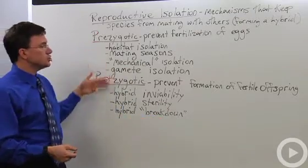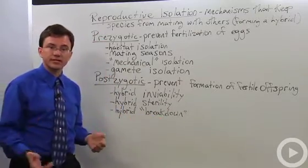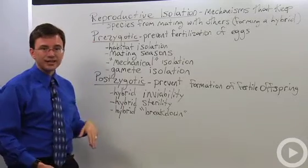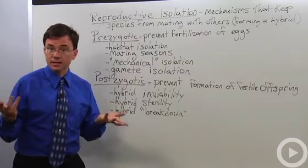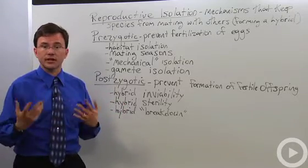These fall into two categories, these reproductive isolating mechanisms. They're prezygotic reproductive isolating mechanisms, the ones that prevent the zygote from happening, the fertilization of the egg by sperm.